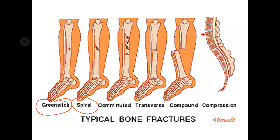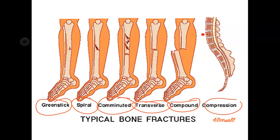Next is the comminuted break, where the bone breaks in several different places and crushes. You can have a transverse break, which breaks completely through on a transverse line. There's also the compound break, where the bone sticks out of the skin. Then there's the compression break, which often occurs in the spinal column in older people with osteoporosis, where the bone crushes or compacts down.